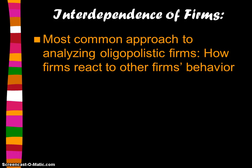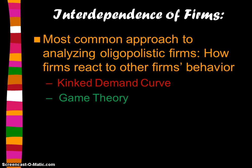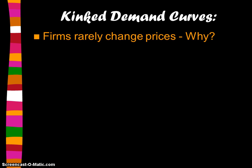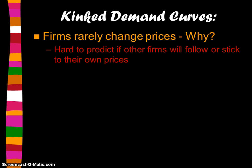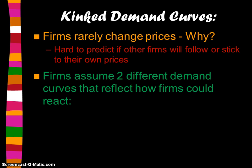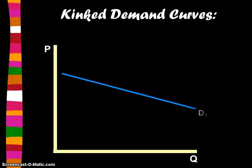The third and final approach to analyzing oligopolistic behavior is called game theory, represented by the kinked demand curve. The kinked demand curve shows us why firms rarely change their prices. It's hard to predict if other firms will follow or stick to their own prices, because firms assume two different demand curves reflecting how rivals could react.